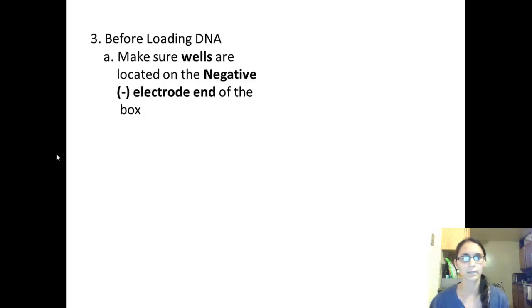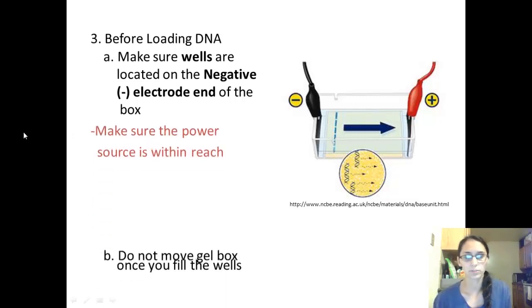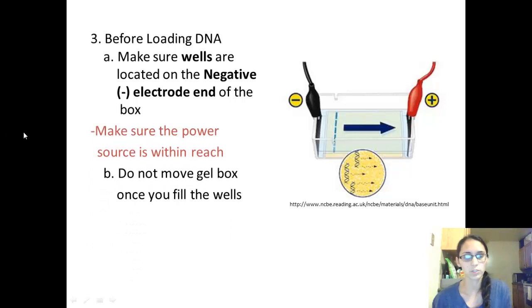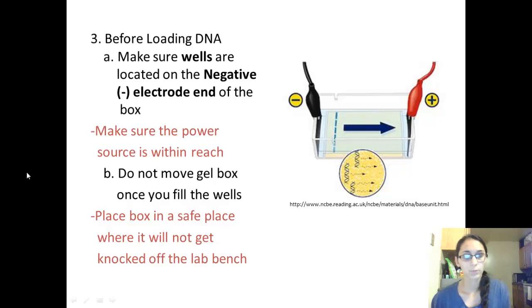Before loading the DNA, we want to make sure that the wells are located on the negative electrode end of the box. Here's a picture of a gel box. We have the wells here towards the negative side. Make sure the power source is within reach, and do not move the gel box once you fill the wells, because this can move the DNA sample and contaminate the other wells. Place the box in a safe place where it won't get knocked off your lab bench.